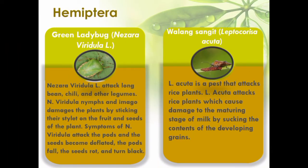Green ladybug, or Nezara viridula, attacks long beans, chili, and other legumes. Nezara viridula as imago damages plants by inserting their stylet into the fruit and seeds. Symptoms of Nezara viridula attack include the pods and seeds becoming deflated, the pods falling, the seeds rotting, and turning black. Leptocorisa acuta is a pest that attacks rice plants, causing damage to the maturing grains by sucking the contents of the developing seeds.